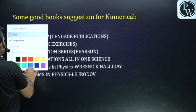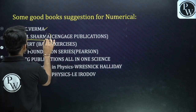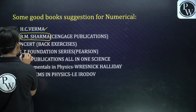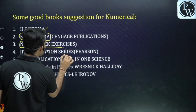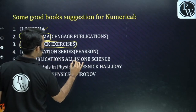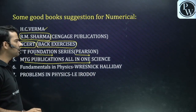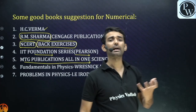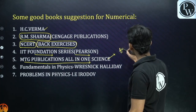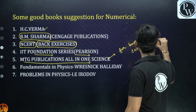For book suggestions for numericals: you can follow HC Verma — a very good book. BM Sharma and Cengage Publications have very good numericals, basically for JEE Advanced. NCERT theory, examples, back exercises, and additional exercises are also good. The Pearson IIT Foundation series is another option. MTG Publications 'All in One Science' has different varieties of numericals topic-wise, which is helpful especially for board examinations.